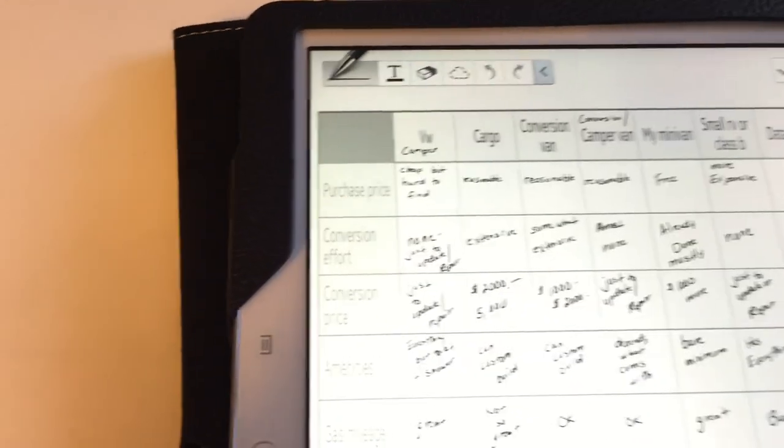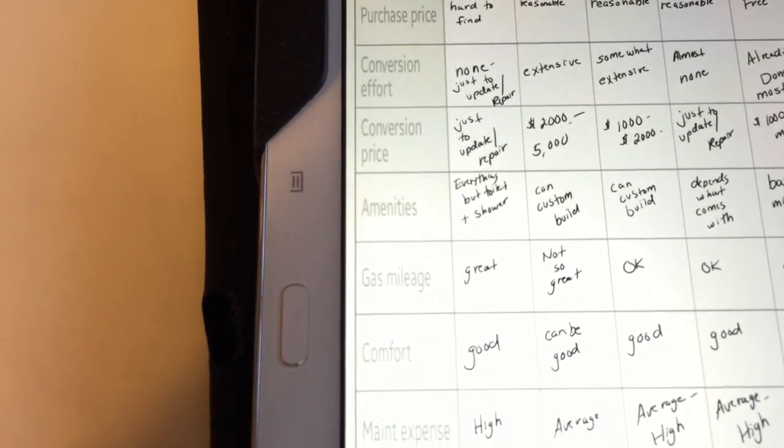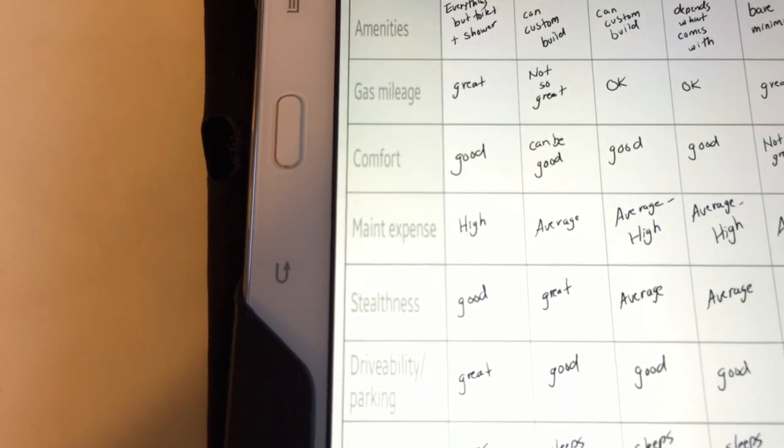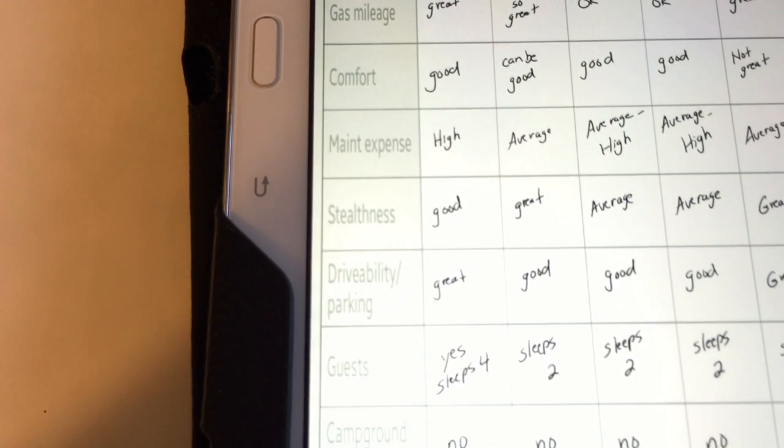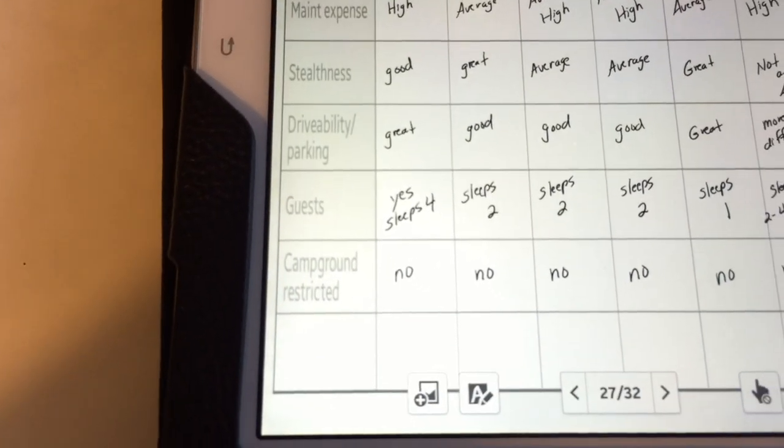And then down this column I have purchase price, conversion effort, conversion price, amenities, gas mileage, comfort, maintenance expense, stealthness, drivability, parking, guests, and campground restricted.